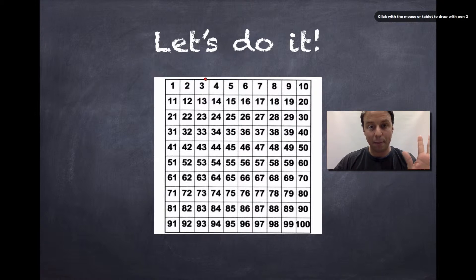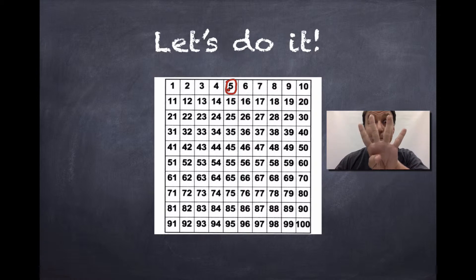Ready? Skip, skip, skip, skip. That's the first number we're going to say, five. And we're going to skip the next four numbers and say the fifth number after that. Skip, skip, skip, skip, 10.